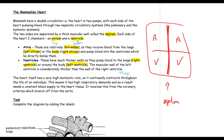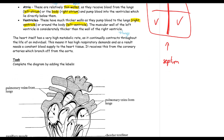The heart itself has a very high metabolic rate. Whenever we talk about a high metabolic rate, it also means a high rate of respiration — so by having a high metabolism, there is a high rate of respiration taking place, meaning it needs lots of oxygen and lots of nutrients. The reason why it has a high metabolic rate is because it continually contracts throughout the life of an individual — your heart never stops. This means it has high respiratory demands and therefore needs a constant blood supply.